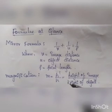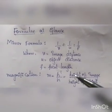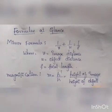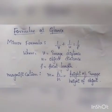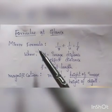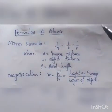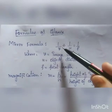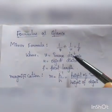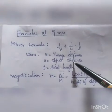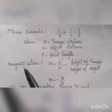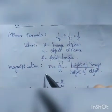Hello students. In the light reflection and refraction chapter, before concluding, we will just glance at the formulas which are very important for the examination. The first thing we discussed is the mirror formula: 1/v + 1/u = 1/f, where v is image distance, u is object distance, and f is the focal length.